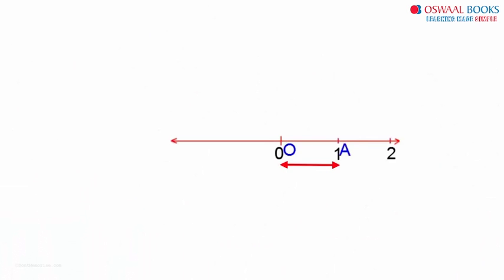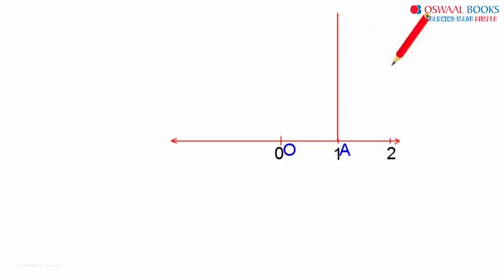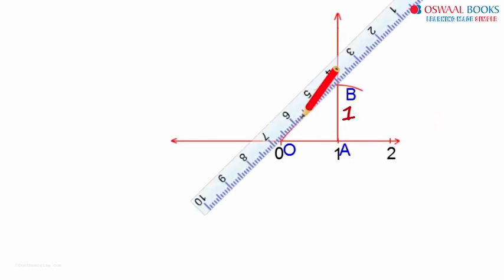Let OA be one unit long. Then we take a protractor, make a 90 degree mark and join that point to A. Then on the compass we take the length of one unit and mark it on this line to get AB as one unit. And then we join OB.